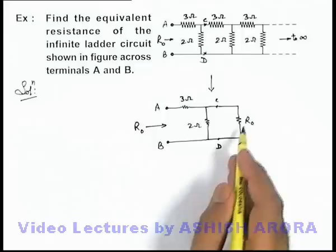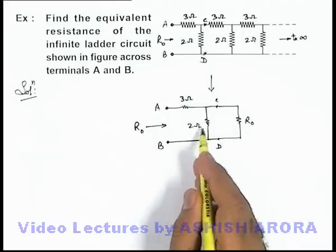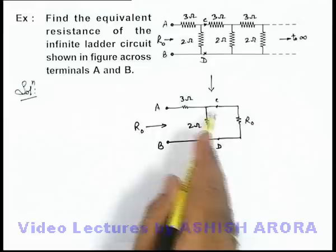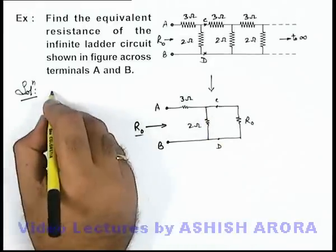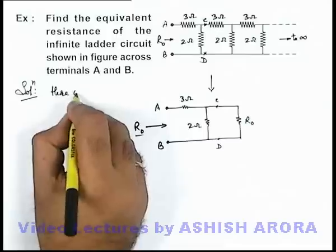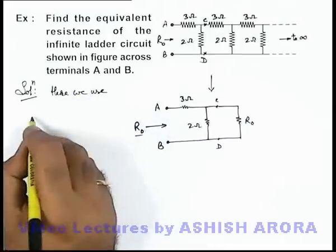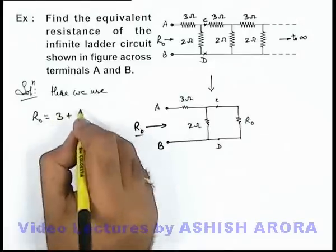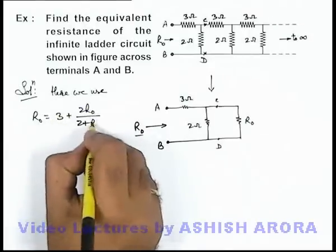So here we can consider this R_not and 2-ohm in parallel, which is connected in series with 3-ohm, and that equivalent can be written as R_not. So we can write: the equivalent resistance R_not equals 3 plus (2R_not)/(2 + R_not).